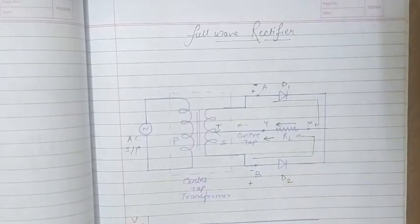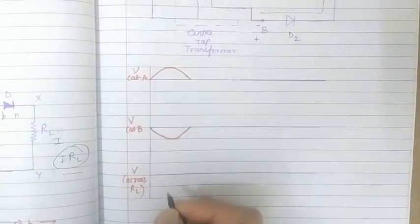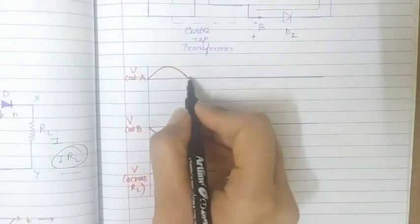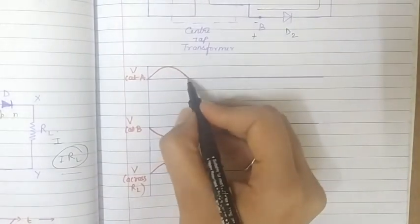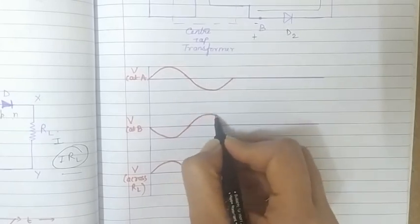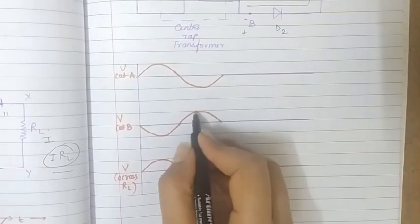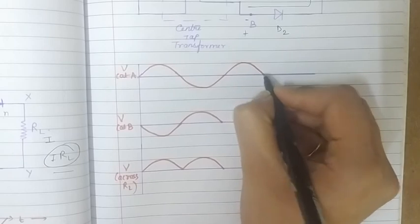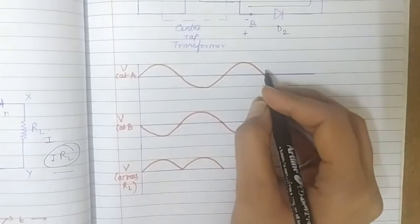During the positive half cycle, voltage at A is positive and voltage at B is negative. The diode D1 connected to the positive is conducting and forward biased, giving us current at the output. In the next half cycle, voltage at A becomes negative while voltage at B becomes positive, and now we get current because of diode D2. The current phase is similar, so we again get current in the same positive direction.